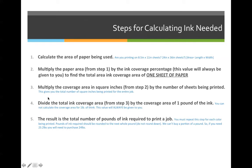Step 3: multiply the coverage area in square inches from step 2 by the number of sheets being printed. Steps 1 and 2 are based on one sheet of paper, and we never print just one sheet — we usually print 500, 10,000, or 8 million postcards. So steps 1 and 2 calculate for one sheet, and then we multiply that by the total number of sheets. If we're making 10,000 postcards, we'd multiply the answer from step 2 by 10,000.